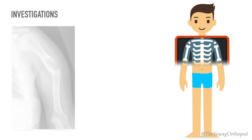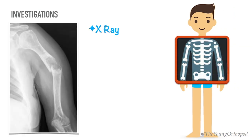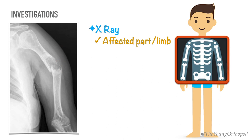X-ray is usually the first investigation and it shows the fracture. The surrounding bone must also be examined, and features such as cyst formation, cortical erosion, and periosteal reaction should be noted. X-rays of other bones, lungs, and the urogenital tract may be necessary to exclude malignant disease.